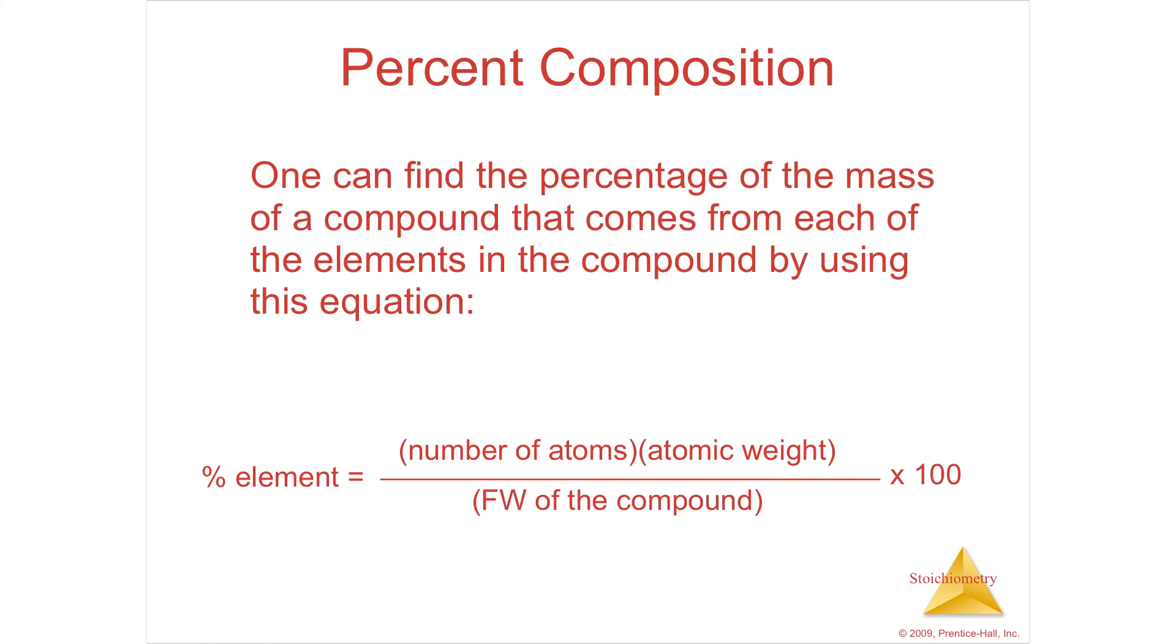The last thing today is percent composition. So how much percent of the whole formula unit, or molecule, is one of the atoms in it, or one of the elements in it? So if you were to have H2O, what is the formula weight? In this case, that's a molecule, so it would be the molecular weight. Well, this would be 2 times 1 equals 2, and then 1 times 16, but for right now 16. That means the total formula weight is 18 AMUs.